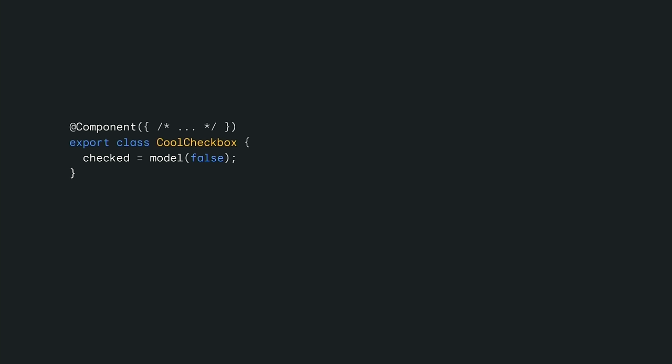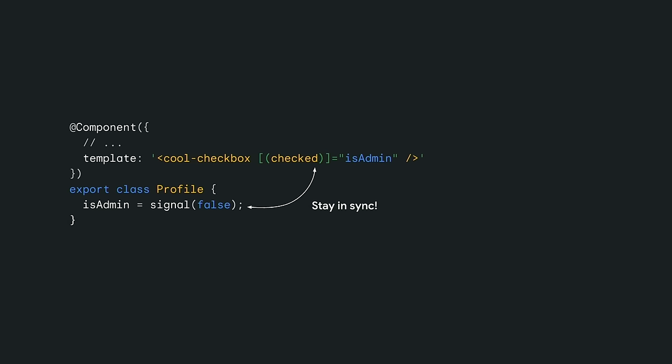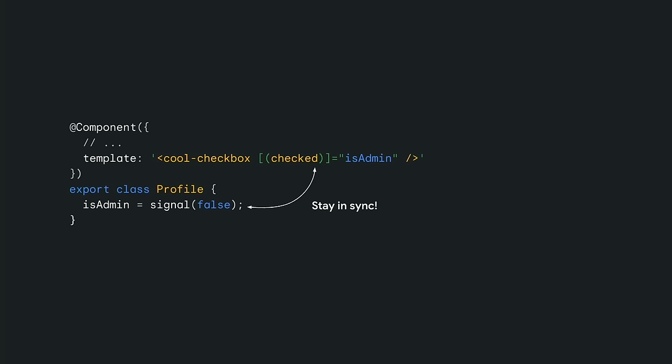Fortunately, adopting signals gives us an opportunity to make this a lot simpler with model inputs — way cleaner. Model gives you a writable signal, so you can update values directly, and they propagate values back through those two-way bindings. Notice that the two-way binding passes the signal instance rather than reading the value from the signal. In this way, the two-way binding defines an explicit contract where the profile component is granting access to the checkbox component to write new values. Making this explicit fits into our goal of making your code safe and predictable.